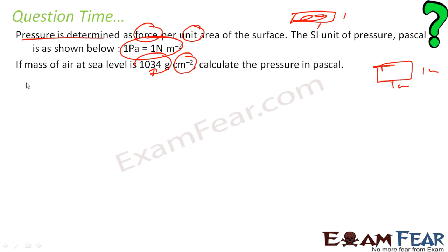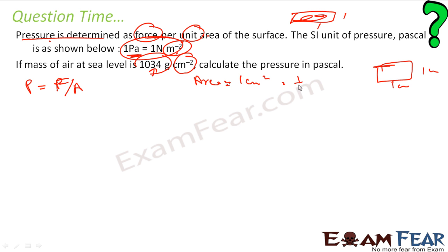Pressure equals force by area. One pascal is Newton per meter square. My area here is 1 centimeter square. I will convert everything to meter square because the SI unit uses meters. So 1 cm × 1 cm = (1/100) × (1/100) meter square = 10⁻⁴ meter square. This is my area.